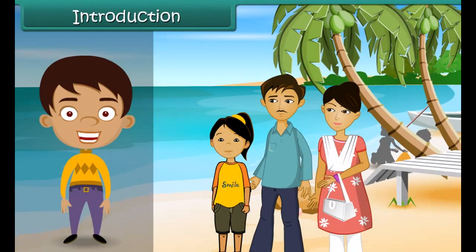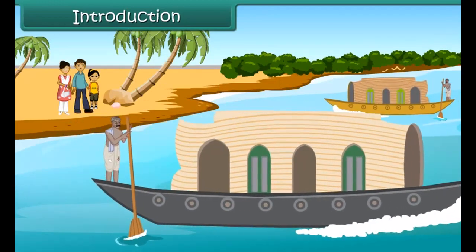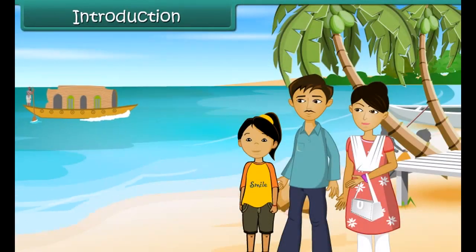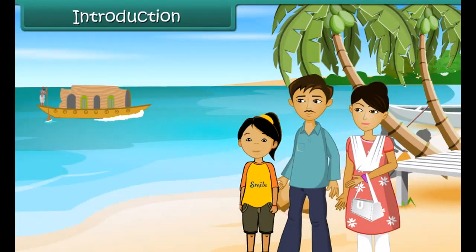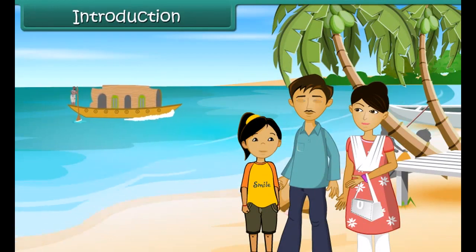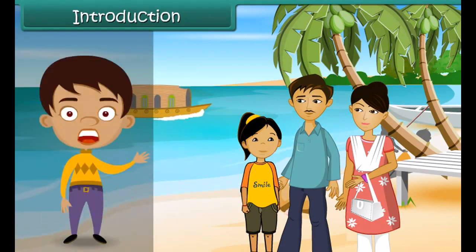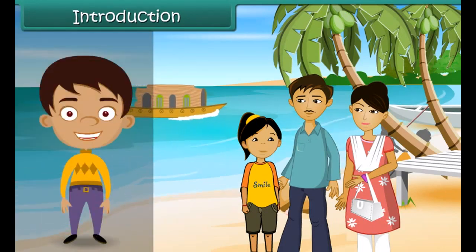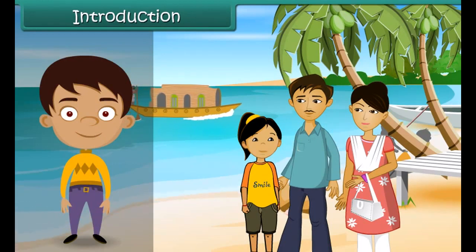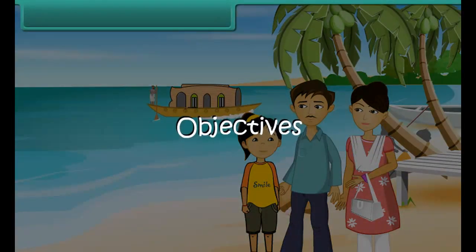Shahra had the holidays at Kerala with her parents. She notices some strange looking boats on water. These boats have huts built on them. She inquires her father about them. Her father tells her that they are houseboats — tourists stay in them and enjoy the scenic beauty around. In this lesson you will learn about different types of houses.